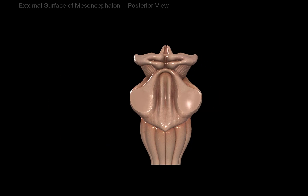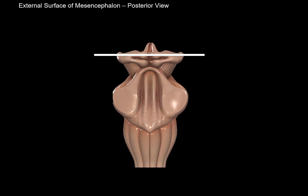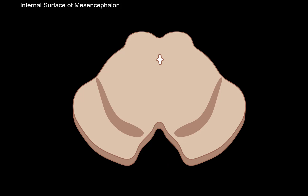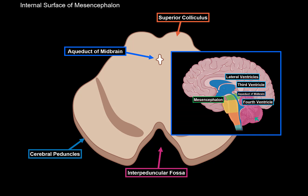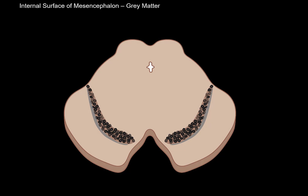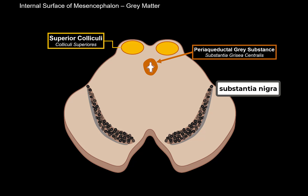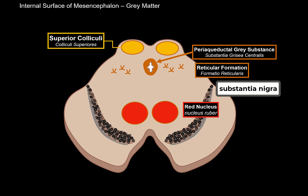Now we'll cut the model at the level of the superior colliculi and look at the cross-section. Here we can see the superior colliculi, the cerebral peduncles, the interpeduncular space, and the aqueduct of the midbrain, which connects the 4th ventricle to the 3rd ventricle. Within the midbrain, we find the substantia nigra, periaqueductal gray matter, reticular formation, and the red nuclei, which receive impulses from the brain and cerebellum and give off the rubrospinal tract for muscle movement coordination. At this level we also find the nucleus of the oculomotor nerve, which is where the oculomotor nerve starts.